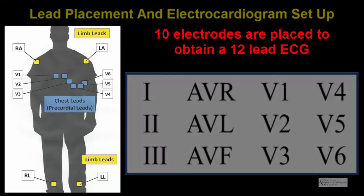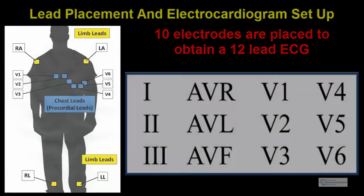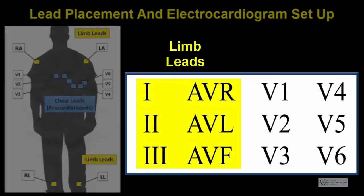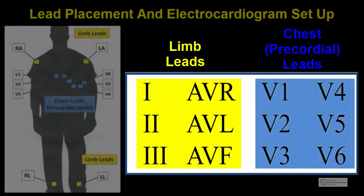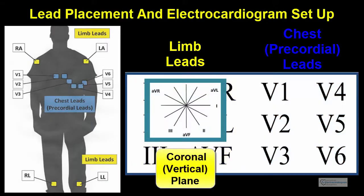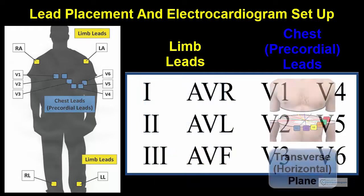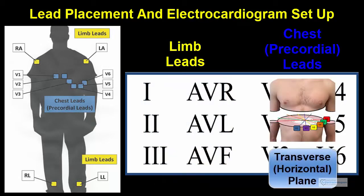Ten electrodes are used for a 12-lead electrocardiogram. Six of these leads are limb leads, and six are chest leads. The limb leads demonstrate the cardiac vectors in the coronal or vertical plane of the body. The six precordial or chest leads demonstrate the cardiac vectors in the transverse or horizontal plane of the body.